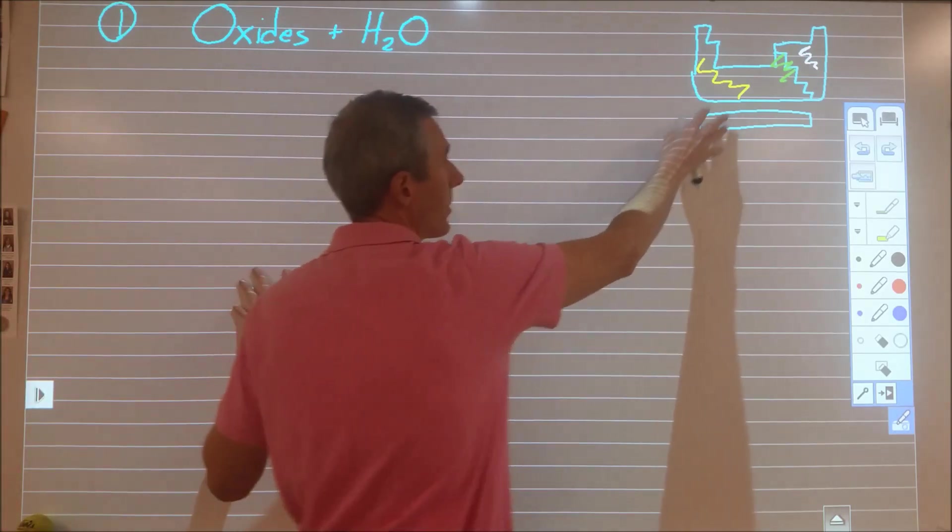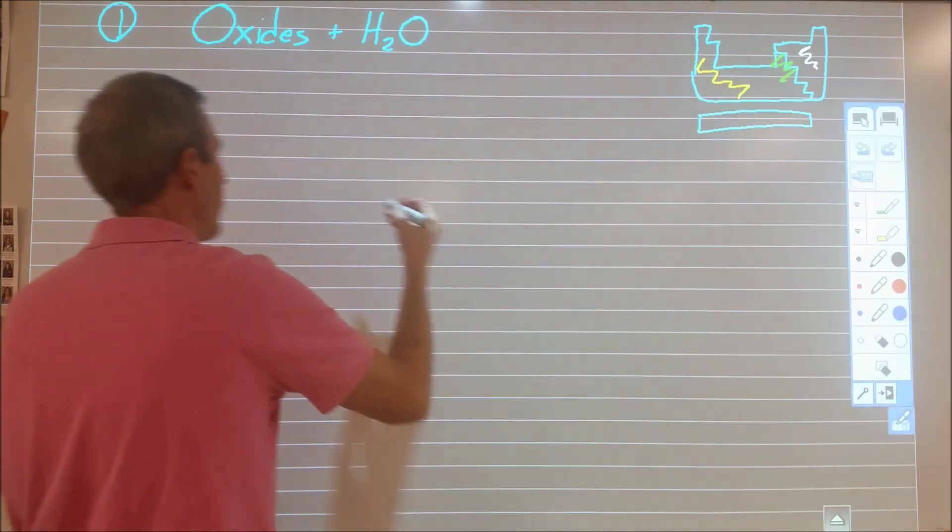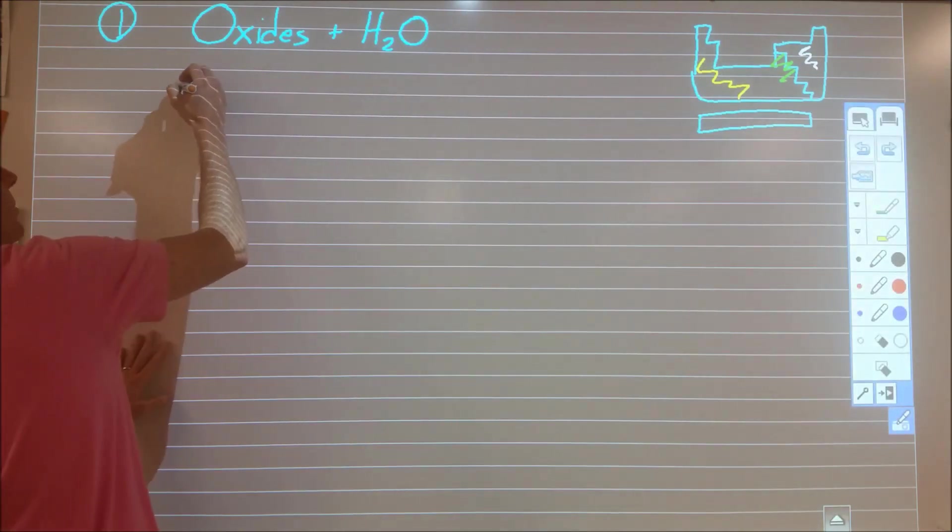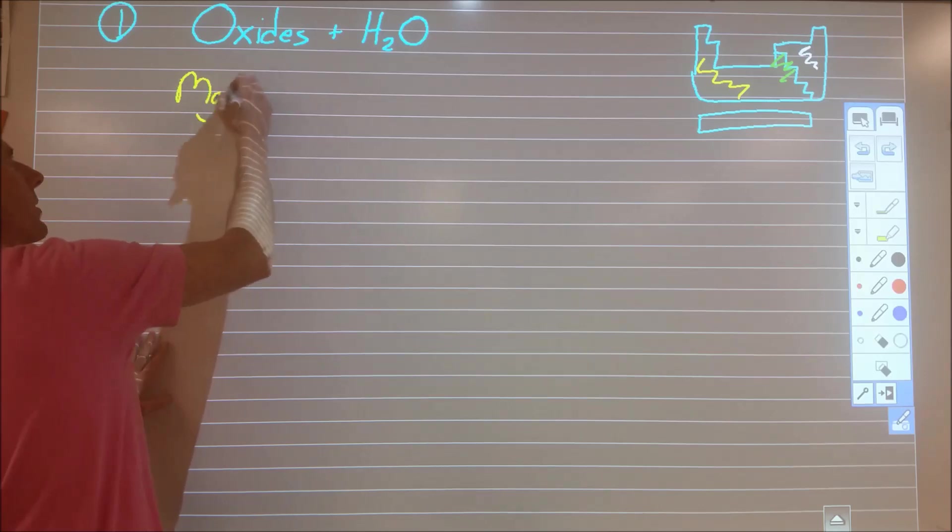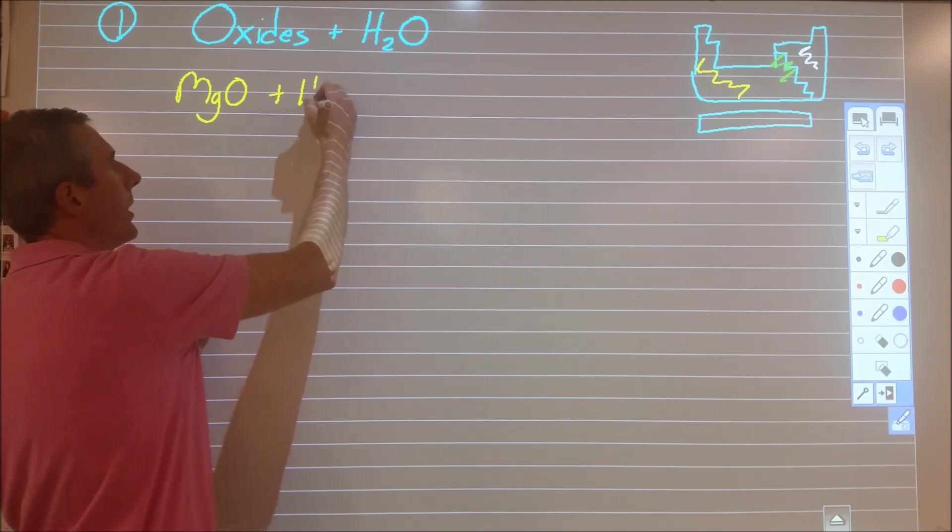So non-metals, or metals, I'm sorry, metallic oxides. And so let's do a couple of examples of those. The one that we saw in the video was magnesium oxide. So we had solid magnesium oxide powder, we added that to water.